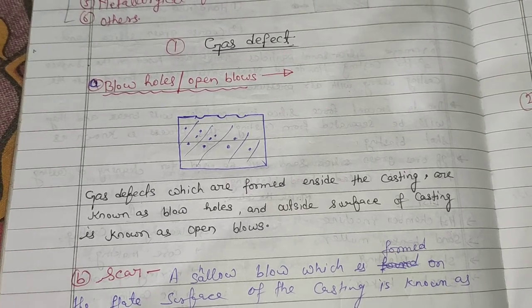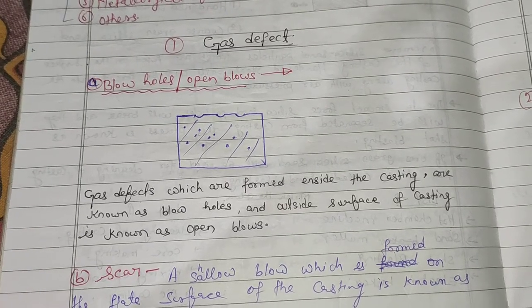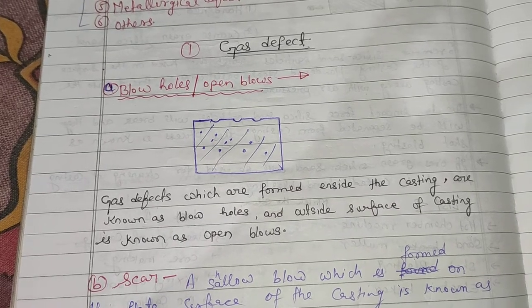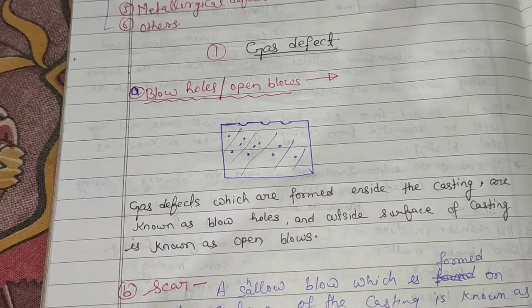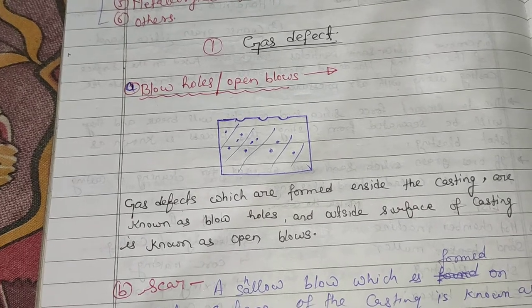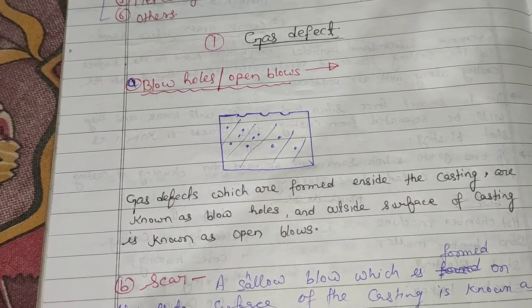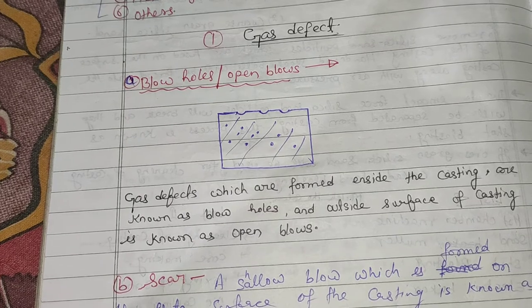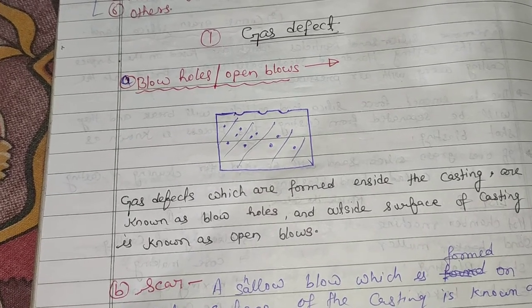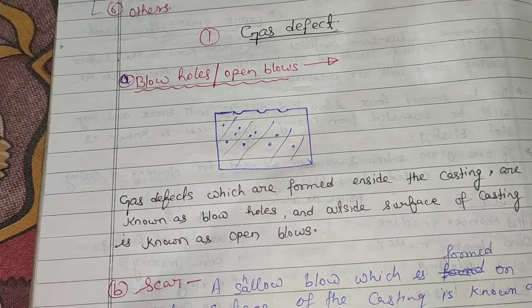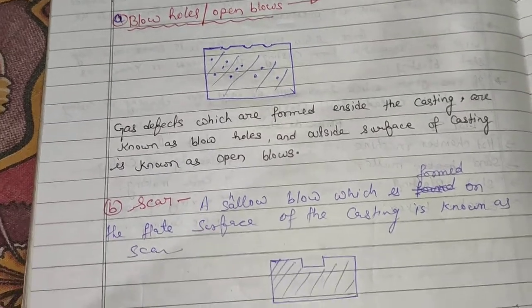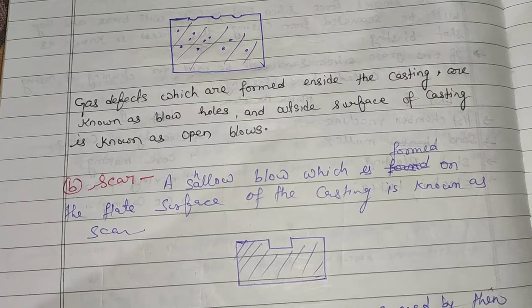In the previous video we studied the types of casting defects. In this video we will study the detailed analysis of gas defects. We studied blow holes and open blows — gas defects formed inside the casting are known as blow holes, and those on the outside surface of the casting are known as open blows, as shown in the diagram.